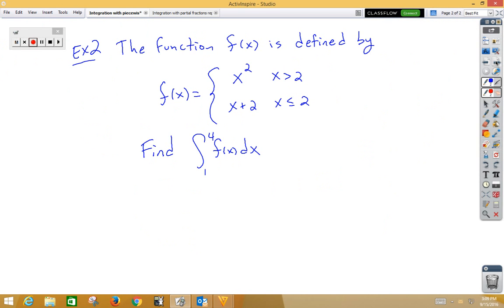Let's try that one more time. In our second example, the function is defined by this piecewise function. This time, we're integrating from 1 to 4. So let's separate that again. The bottom function works to the left of 2, so we use that from 1 to 2, x plus 2 dx. Our second function is good from 2 to 4 of x squared dx.